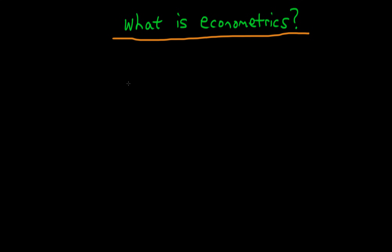In this video I want to talk about what we actually mean by econometrics. Econometrics is in general a statistical toolset which helps us to evaluate some sort of relationship of interest. An example might be: for individuals, what is the effect of an individual's level of education on the average wage which that individual might expect to obtain?